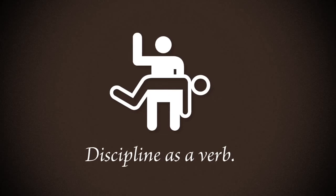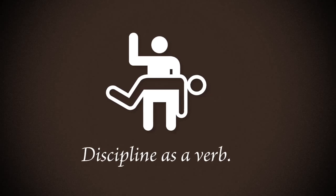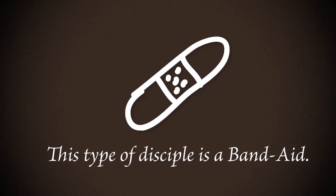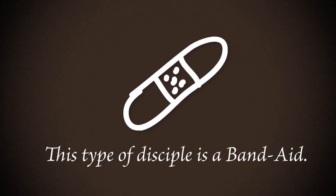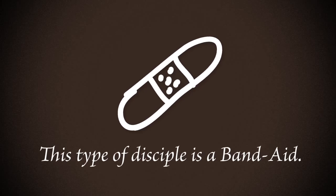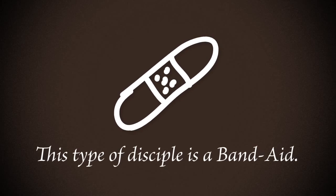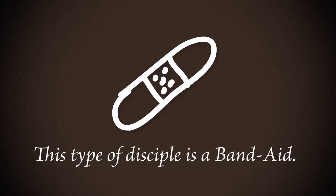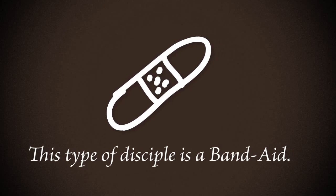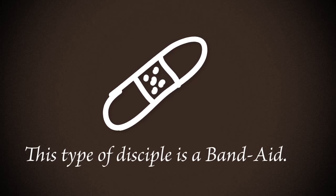It stops behavior temporarily. This type of discipline is simply a band-aid — it stops deviant behavior temporarily. Procedures, on the other hand, teach students responsible skills they can use in school and in life.